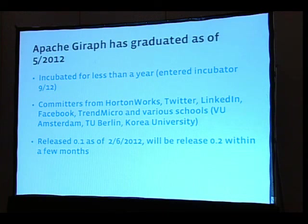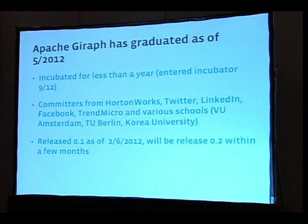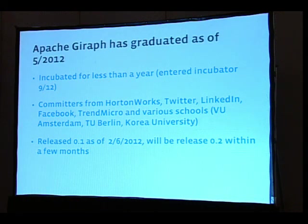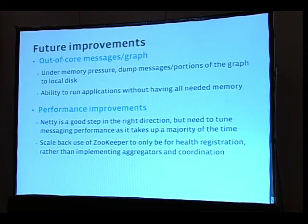As of May of this year, Apache Giraph graduated from the incubator — it's been there less than a year. We've amassed contributions from a variety of companies: Hortonworks, Twitter, LinkedIn, Facebook, Trend Micro, and a lot of engagement from universities doing research and machine learning. There are also a couple of Stanford PhD students working with us — I'll talk about that in future improvements. We rolled our first release in February of this year, we're looking to create a 0.2 release very soon, and there have been requests to include Giraph in BigTop and other distributions as well.